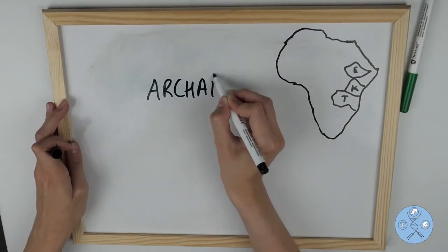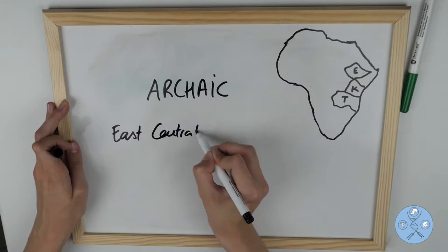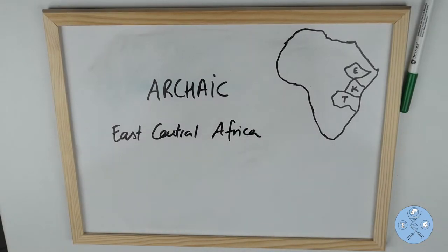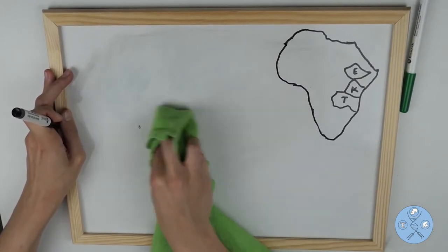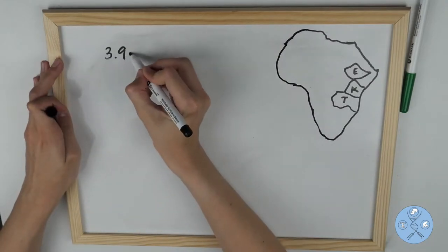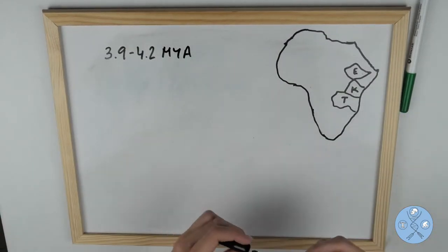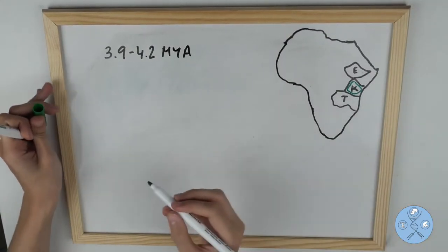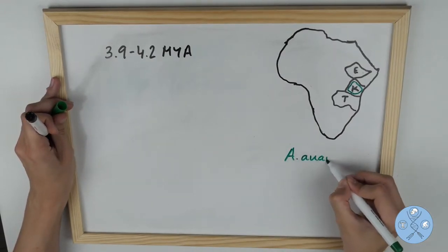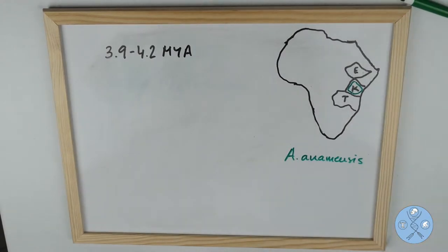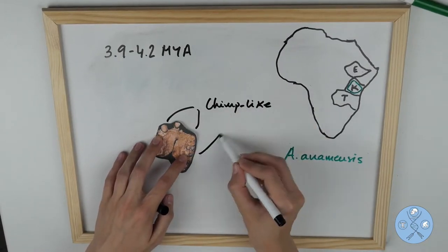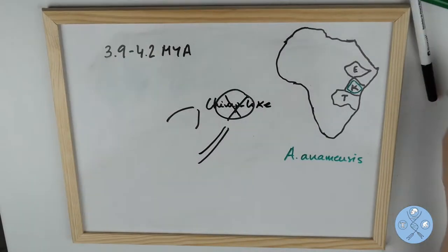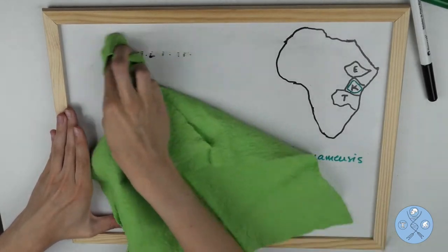The first type we are going to talk about are the archaic hominins, focusing more on East Central Africa. It all started around 3.9 to 4.2 million years ago in Kenya, where we meet our first archaic hominin, Australopithecus anamensis. Although there is not a complete skull of this specimen, we know that its canines are chimp-like, but other teeth are much different from those of the chimps.